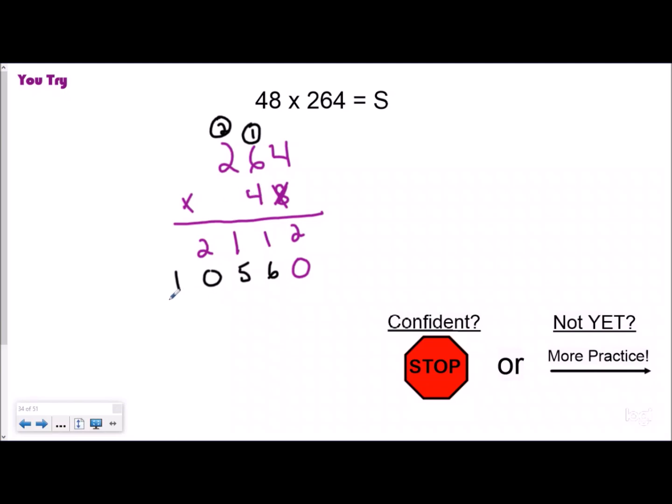Now I've multiplied all the digits up top by the digits in my tens place, so all I need to do is add these together. I have six, two and one, and so your answer or your product should be 12,672.